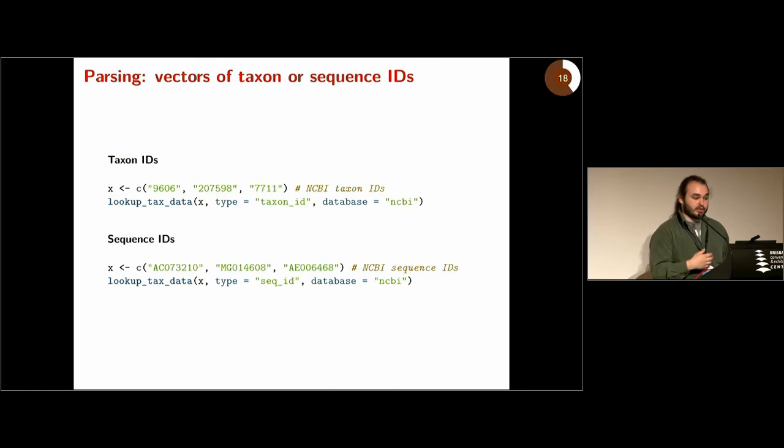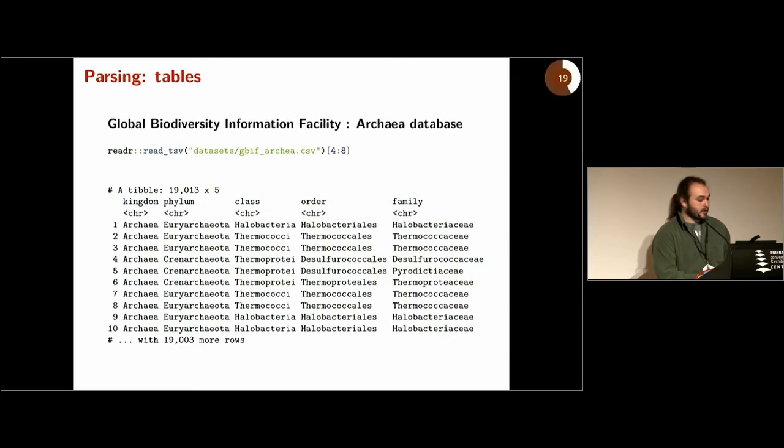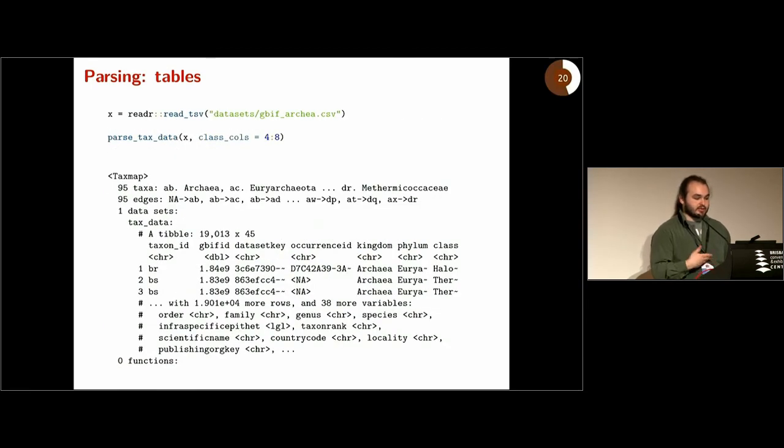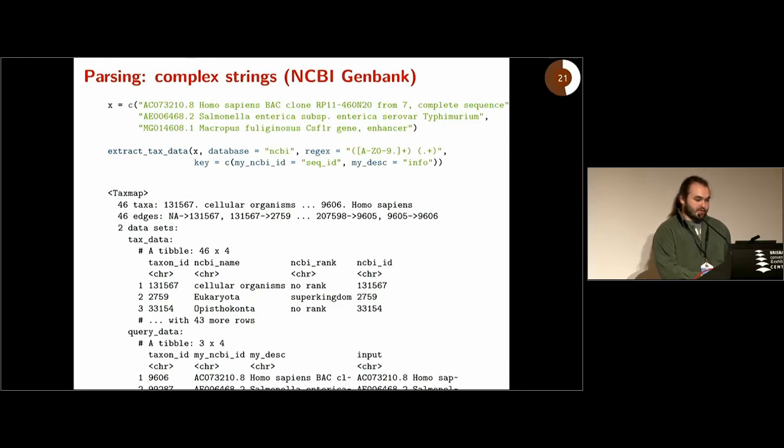It's very similar if you want to use taxon IDs or sequence IDs - I won't show the output, but you just change this type parameter. If you have a table, like this is the GBIF Archaea database I showed you previously that has taxonomic information in columns four through eight, you would use the same function for parsing things that are not online, just define the columns that this information is in. You have the original table here and you have an additional taxon ID column.